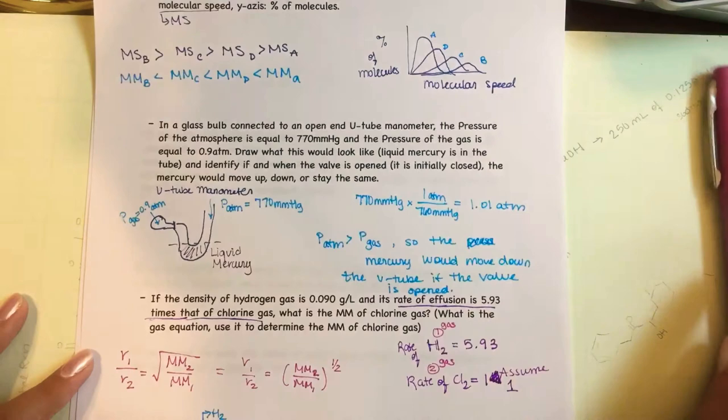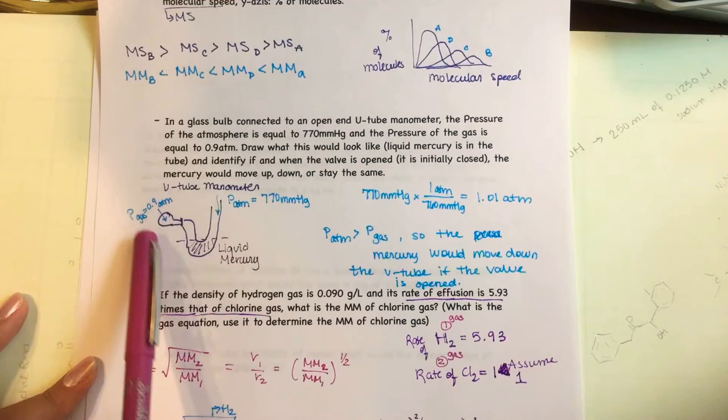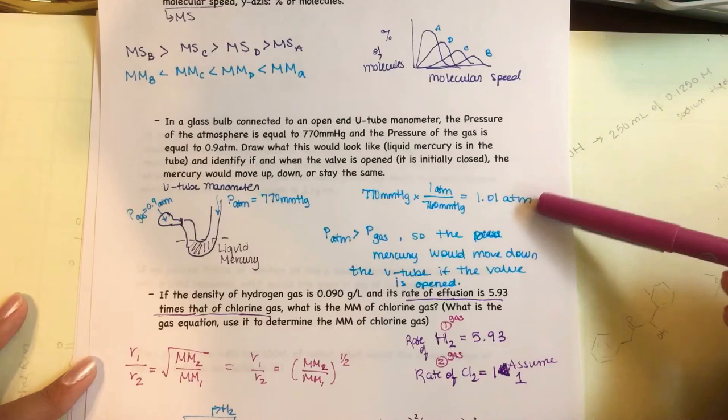Then the U-tube manometer, a very good thing to know, especially for General Chemistry 1 at AWC. Definitely know how this works, what it means for pressure of the atmosphere and pressure of the gas, and definitely know how to convert between gas units.